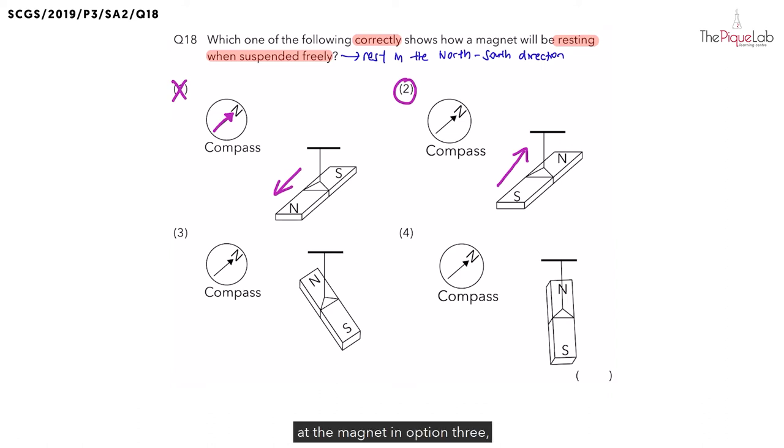Now when we take a look at the magnet in option three, we can see that the magnet comes to rest in this direction. So does the magnet in option three come to rest in the same direction as the compass needle? Obviously no. So we can cross out option three.